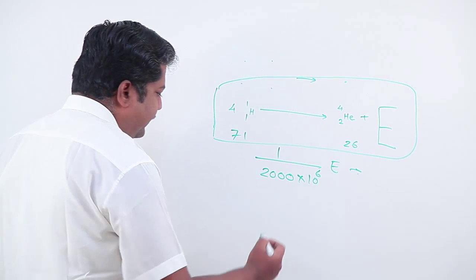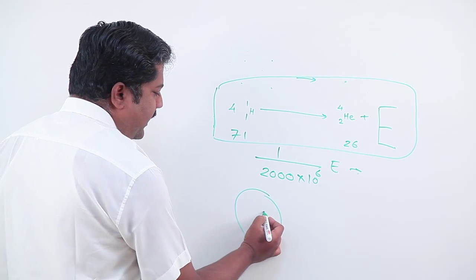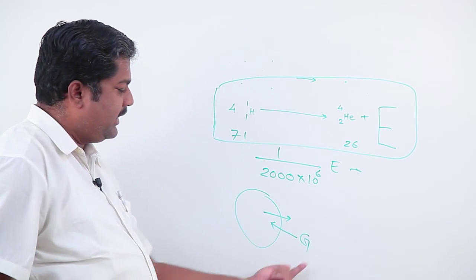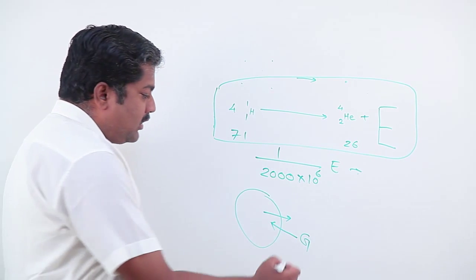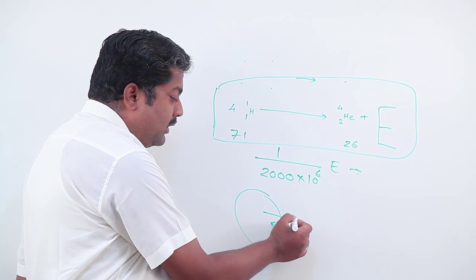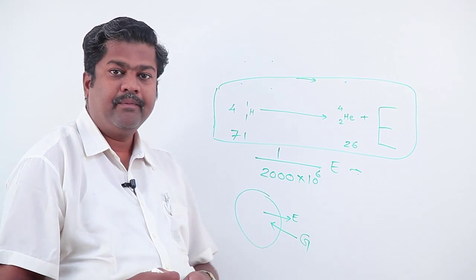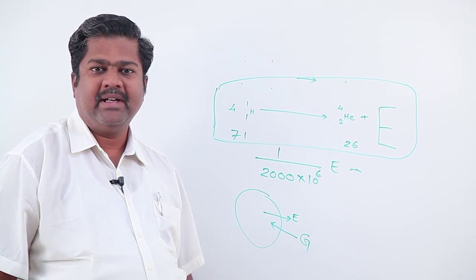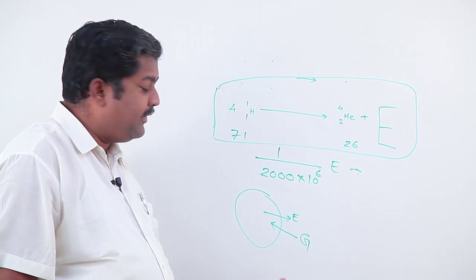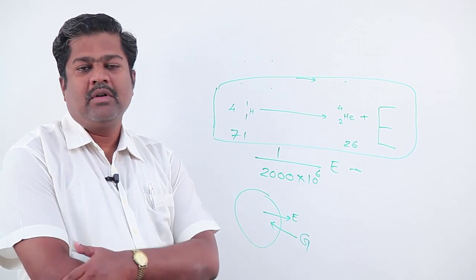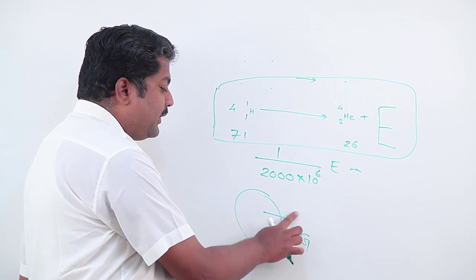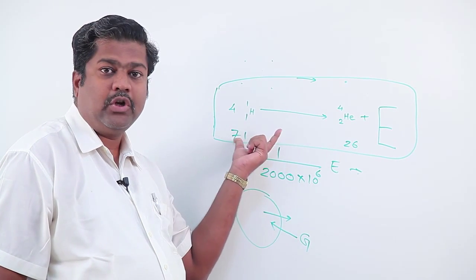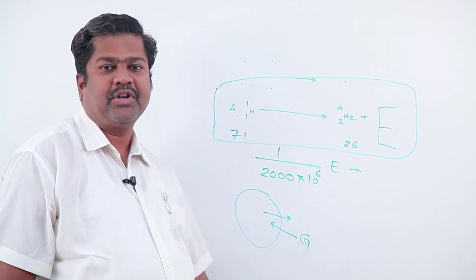Now in case of sun we have to consider two important forces. Because of gravity it should shrink and because of high temperature it should expand out. Now it is at equilibrium position that means balance position. Gravity is allowing it to shrink whereas temperature is rising out. So but you will imagine after that because of rising temperature will not be there sun will start shrinking out.